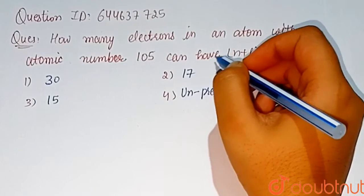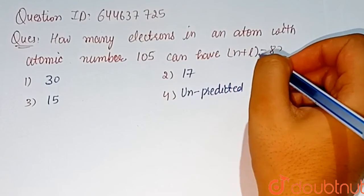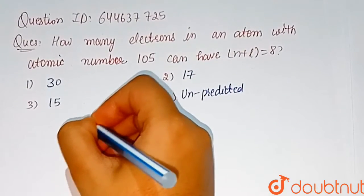in an atom with atomic number 105 can have n plus l equal to 8? So electronic configuration of element with atomic number 105 is: